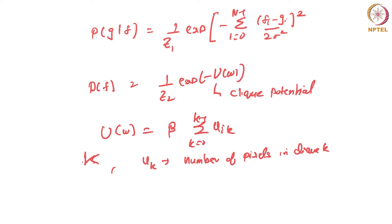You can consider a 3×3 neighborhood and count — the center pixel and surrounding pixels that have the same value. You can count the number of pixels which have the same value as the center pixel.